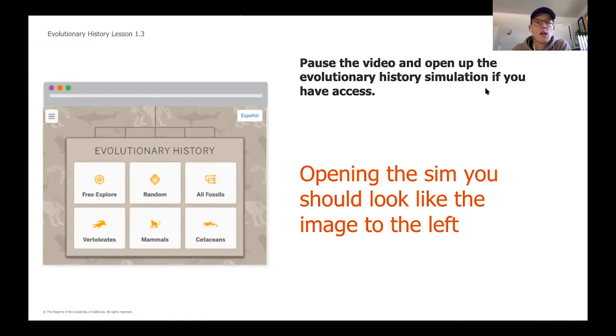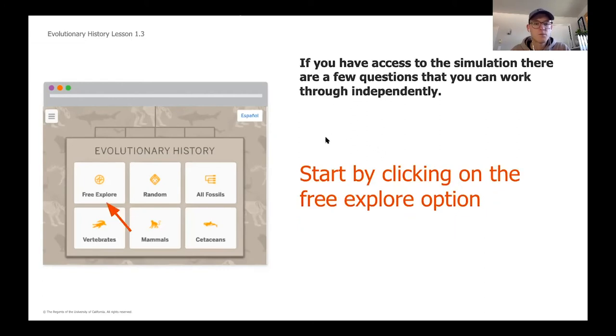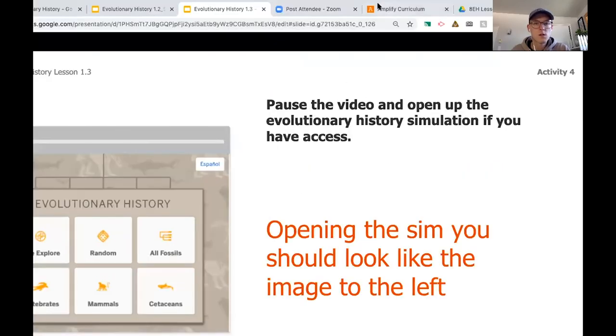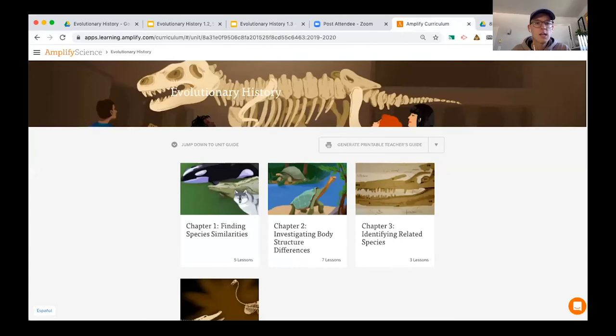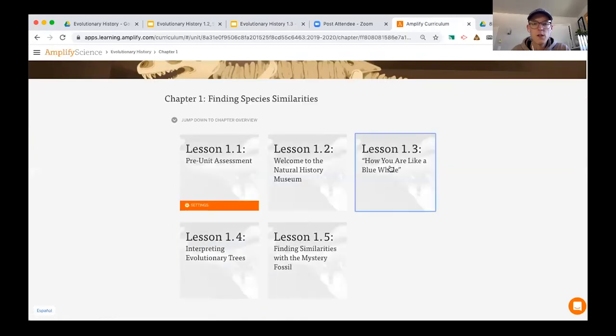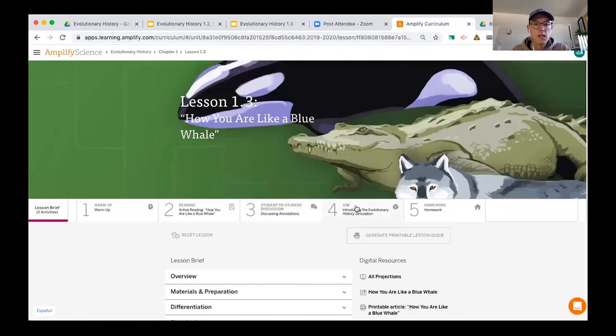So what we're going to do now is we are going to be opening up the simulation that we're going to be using throughout this entire unit. So again, if you do have access to Amplify at home, I'm going to show you how to click through. You're going to log in using the way that you ordinarily would log in. And then we're going to walk through some of the steps of the video together. So if you do have access, I want you to pause the video right now and open up the Evolutionary History Simulation.